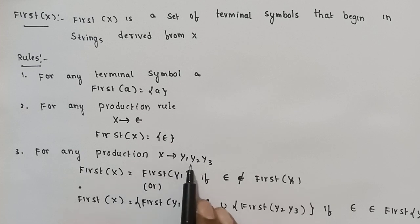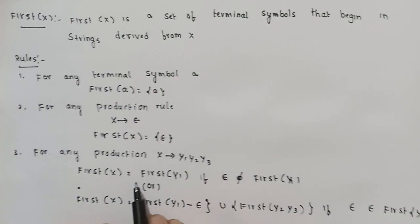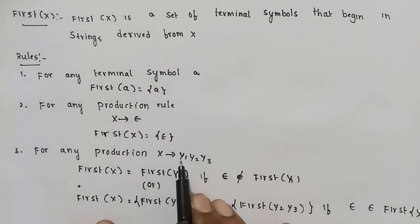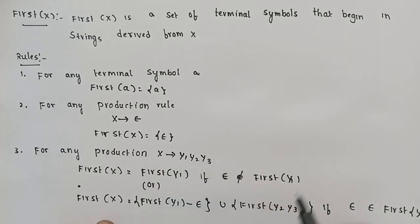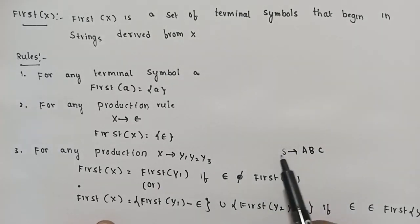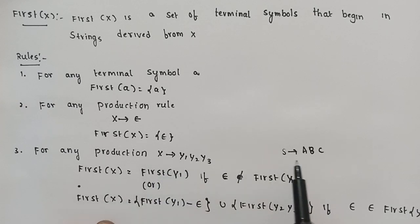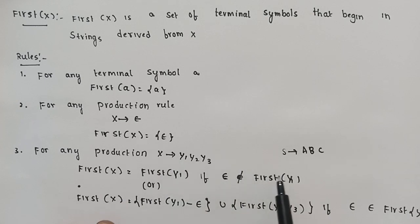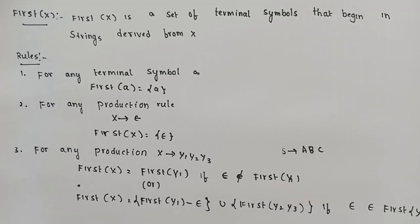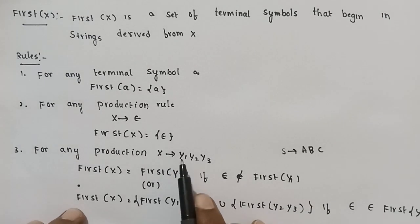For any production X stands to Y1, Y2, Y3 — First of X is a non-terminal. So first of X is equal to the non-terminals. First of X equals First of Y1.